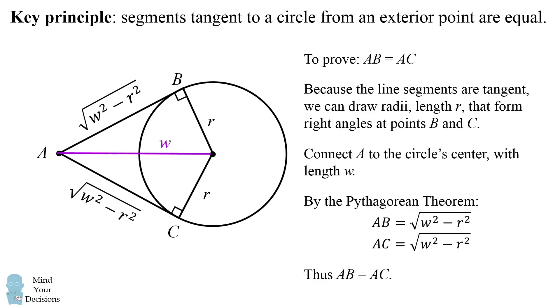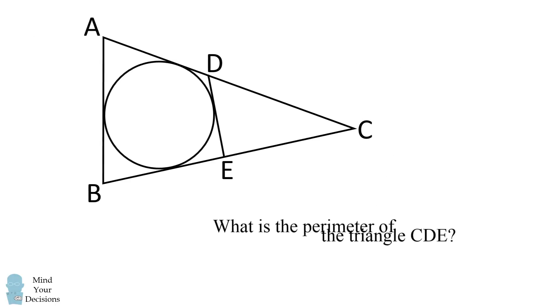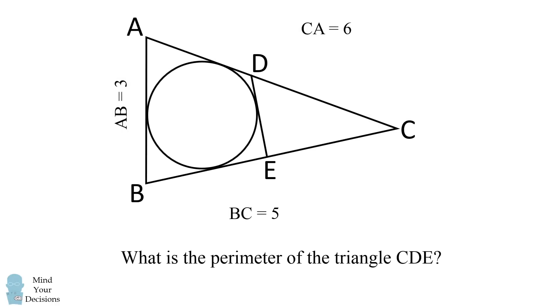So we're going to use this principle many times to solve this problem. So how can we figure out the perimeter of triangle CDE? Well, let's look at the pertinent parts of the question and now let's think about what we need to solve for. Let's suppose this tangent point is labeled F, this tangent point is labeled G, and the tangent point between DE and the in-circle is J.